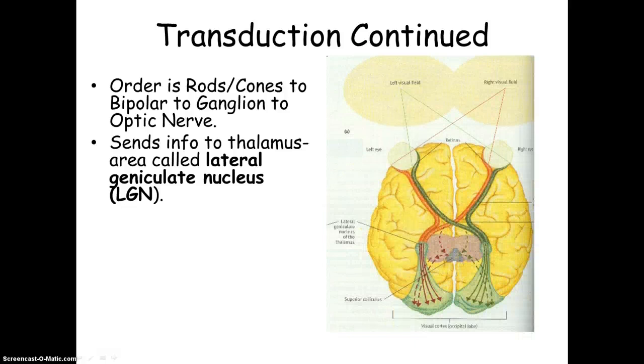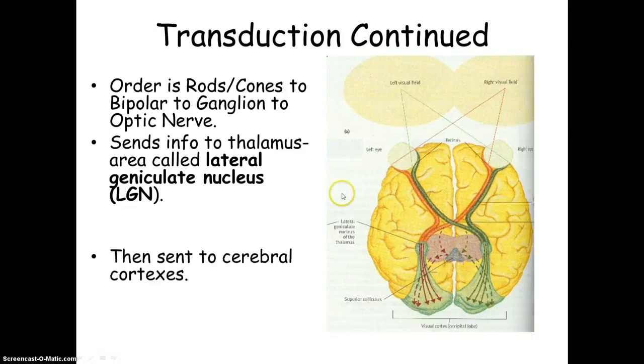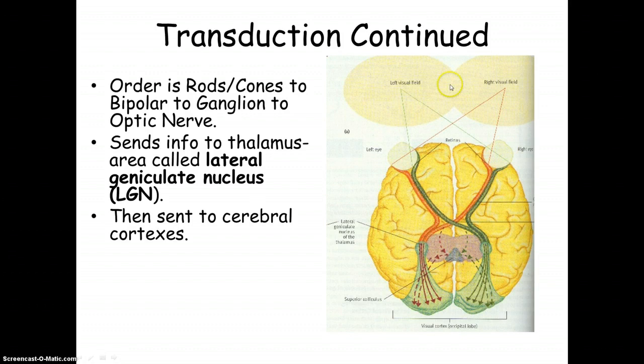So here we have that description of transduction I talked about in class on Tuesday. And here you can see better what's actually happening in the brain. So there's our optic nerve. It crosses. And the information goes to the thalamus. Remember, the thalamus is where all sensory input goes except for the sense of smell.